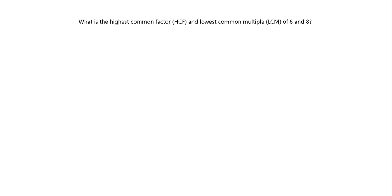Let's start with a very simple one: finding the highest common factor and lowest common multiple of six and eight. Starting with the highest common factor — factors are things that divide into those numbers without a remainder. What are the factors of six? One goes in with its partner factor of six, two goes in with its partner factor of three, and then the next number is three — but we've already got it, so we've got all our factors of six.